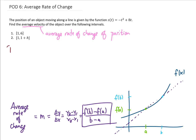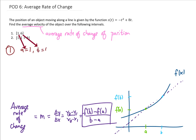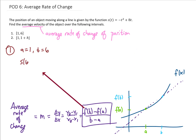For the first problem we're given an interval 1 to 6, which means a equals 1 and b equals 6 in this formula. So our average velocity, or average rate of change of this given function, is going to be s of 6 minus s of 1, divided by 6 minus 1.